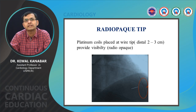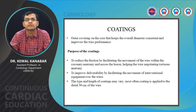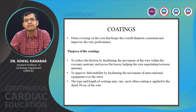The coating on the guide wire is an outer covering on the core that keeps the diameter consistent and improves performance. It improves trackability and crossing ability by reducing friction, facilitating movement within the coronaries and across the lesion. It also improves deliverability of interventional devices. The type and length of the coating varies; most often the coating is applied to the distal 30 centimeters of the wire.